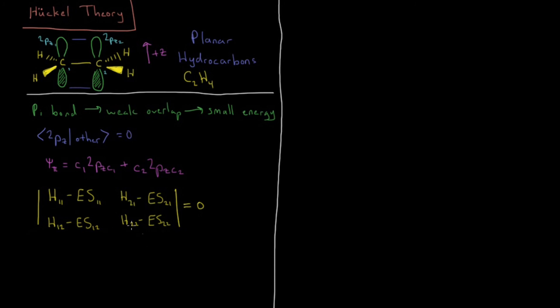So for our case, we're going to simplify this by assuming that Sij is the Kronecker delta, saying that the basis set is orthonormal. So our diagonal elements, Sii for 1,1 and 2,2, that's going to be 1, and S for i not equals j is going to be 0. So that simplifies things quite a bit. We can get it down to H11 minus E, H21, H12, and H22 minus E, and that determinant equals zero.